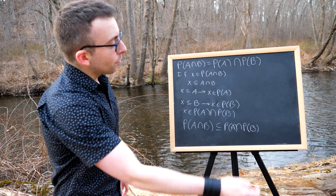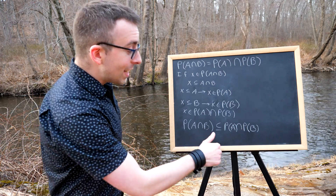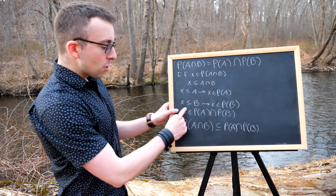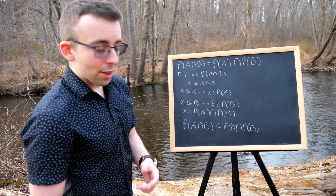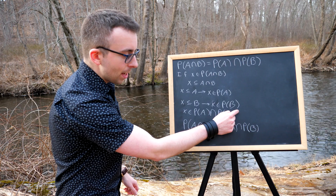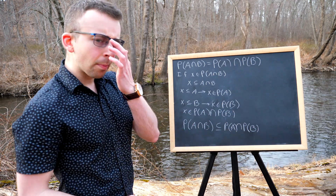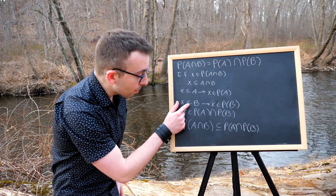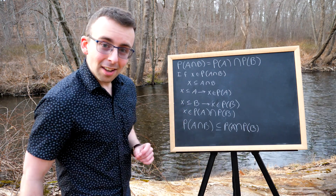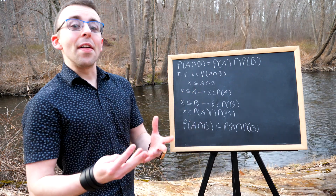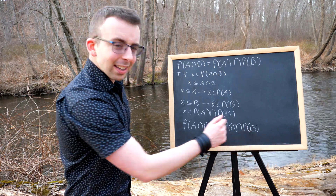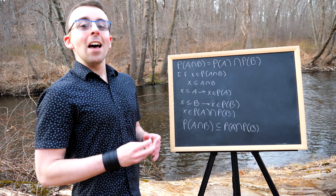All that remains for this set equality proof is to prove that this is a subset of this. We can just do this going backwards. We begin with an arbitrary element of the power set of A intersected with the power set of B. Being an element of that intersection means X is an element of the power set of B and X is an element of the power set of A. Then we apply the definition of power set to conclude that X must be a subset of A and X must be a subset of B. But if X is a subset of A and X is a subset of B, that means X is a subset of their intersection. Then by definition, X is an element of the power set of the intersection. So we've proven that the power set of A intersected with the power set of B is a subset of the power set of A intersect B.